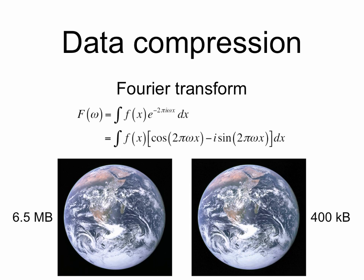And then there's data compression. Here are two images of the Earth. The one on the left requires 6.5 megabytes of disk space, while the one on the right requires 10 times less space — only 400 kilobytes. One way to compress data is to use a Fourier transform, which is shown here, along with its cosine and sine terms.